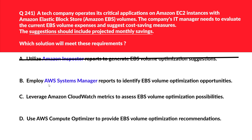Let's move to option B. B says employ AWS Systems Manager reports to identify EBS volume optimization opportunities. Systems Manager is used for operational data and automation, and again it's not for EBS volume cost optimization what the question is looking for. So we'll reject this.